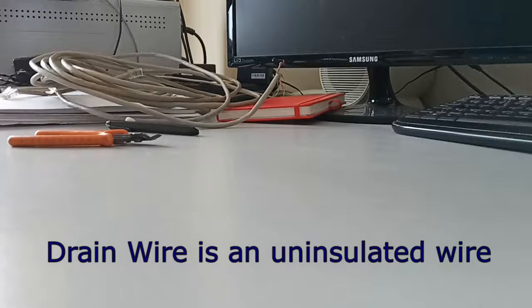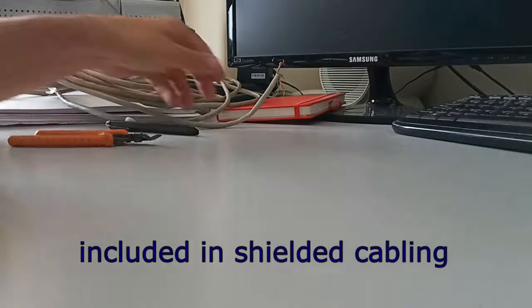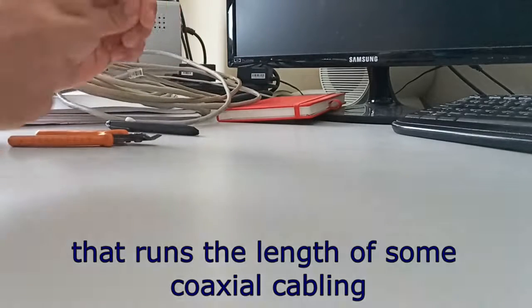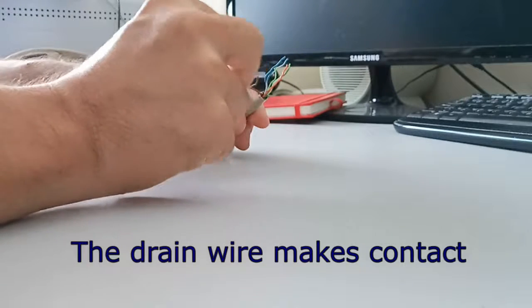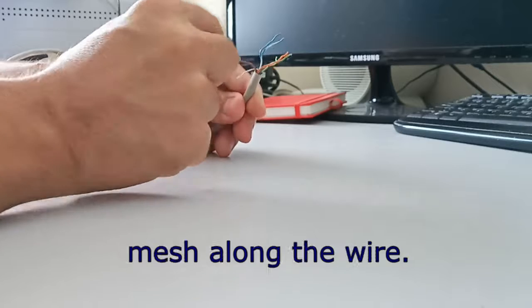What is drain wire? Drain wire is an uninsulated wire included in shielded cabling that runs the length of some coaxial or shielded twisted pair cabling. The drain wire makes contact with the foil sleeve or mesh along the wire.